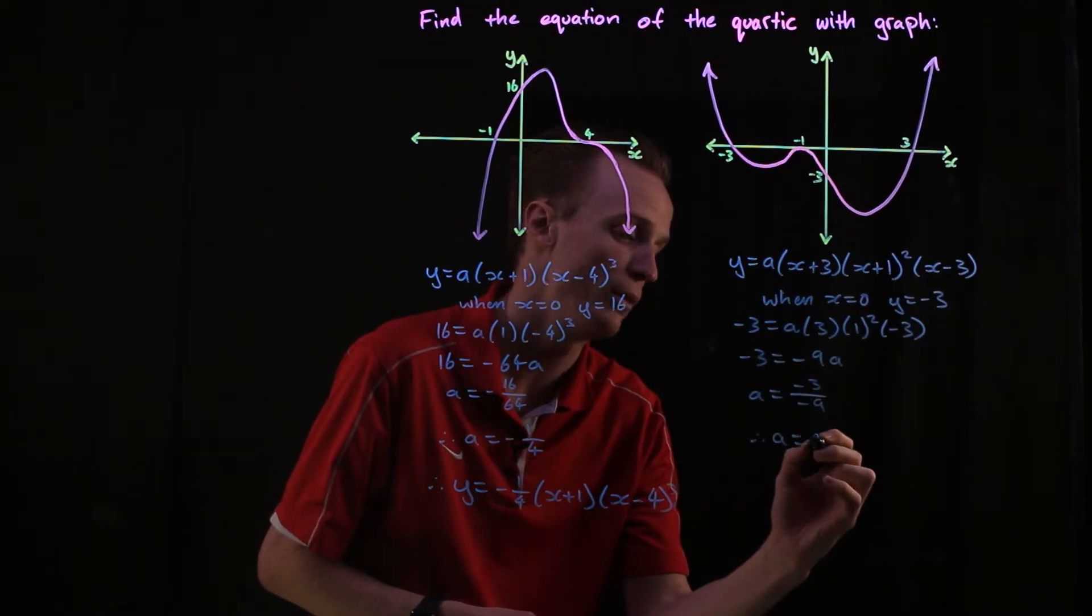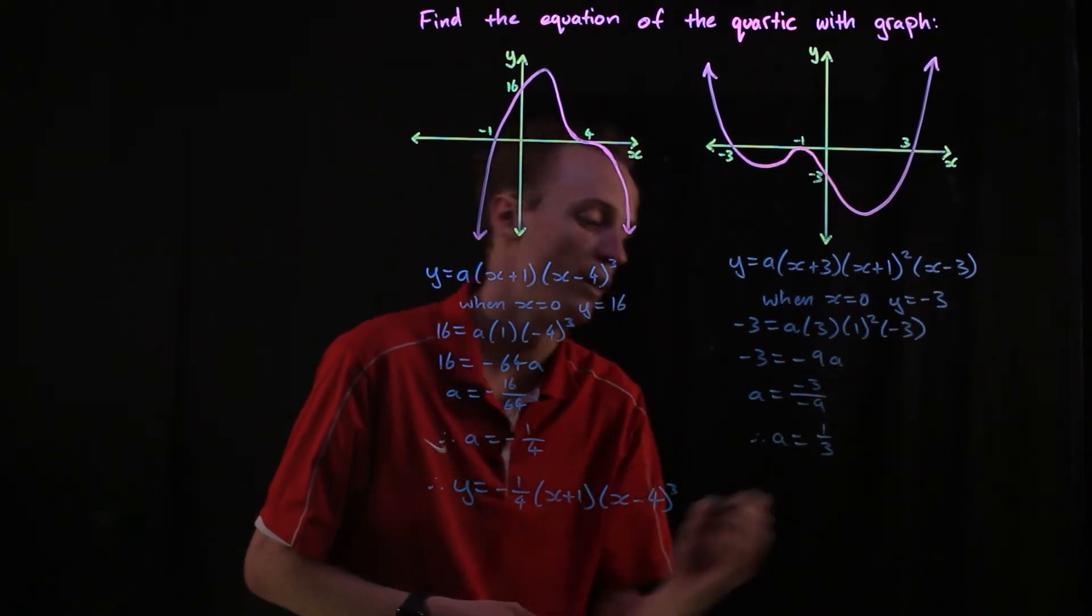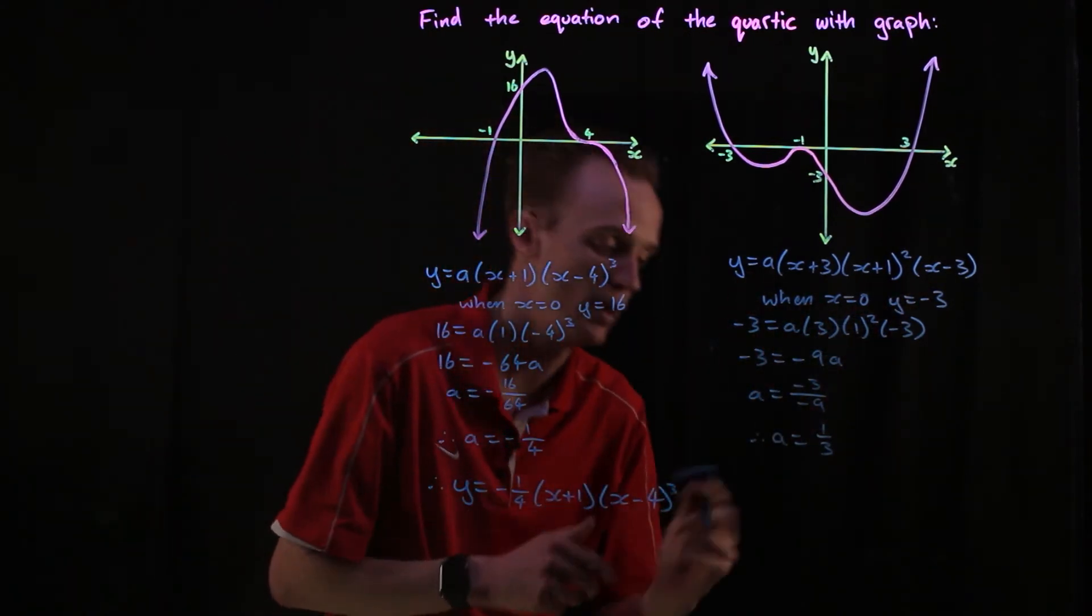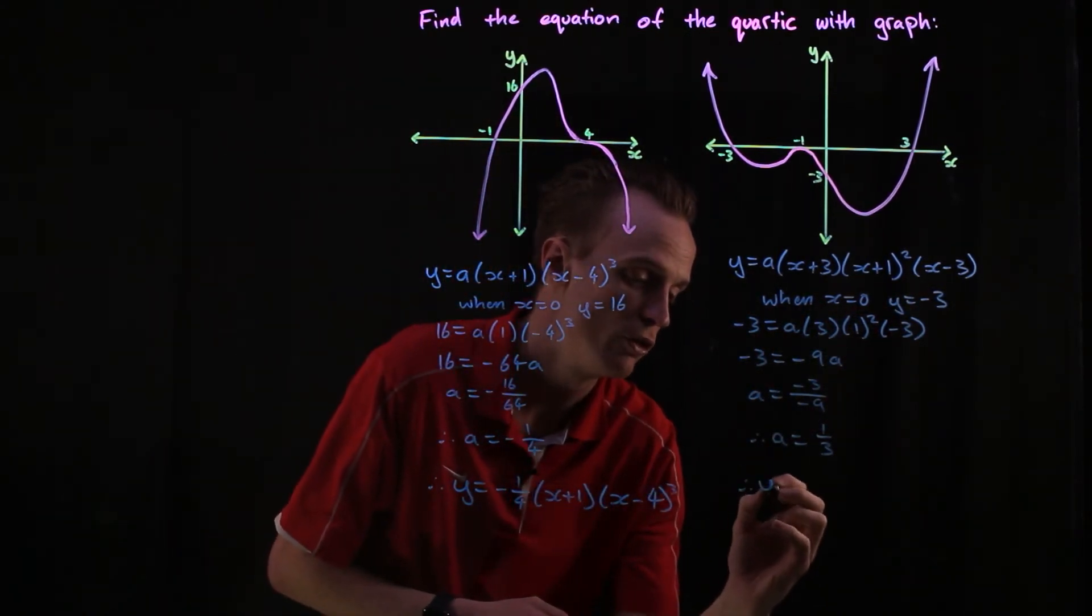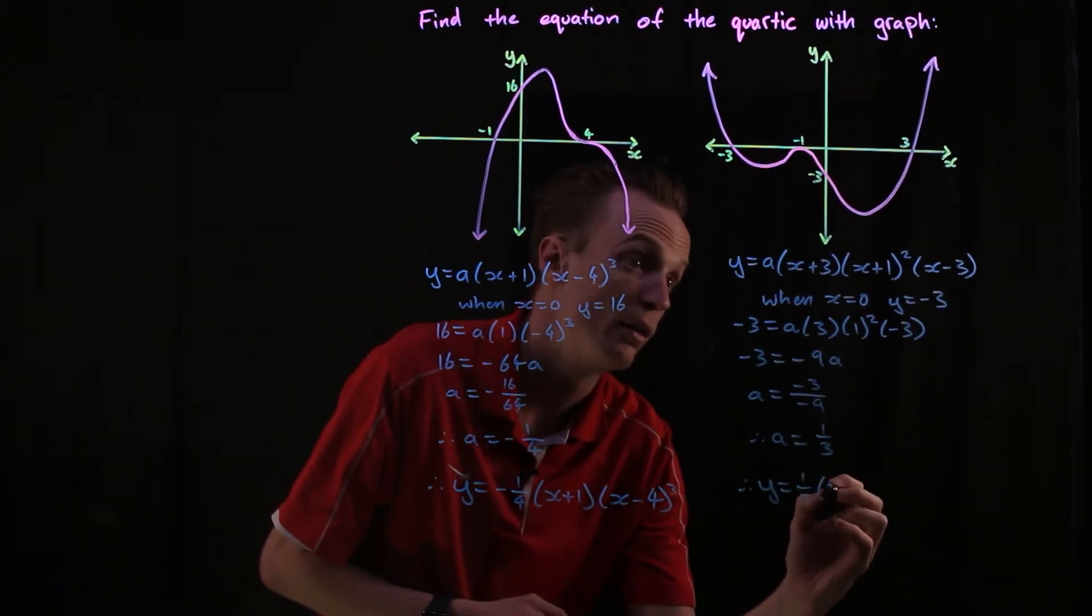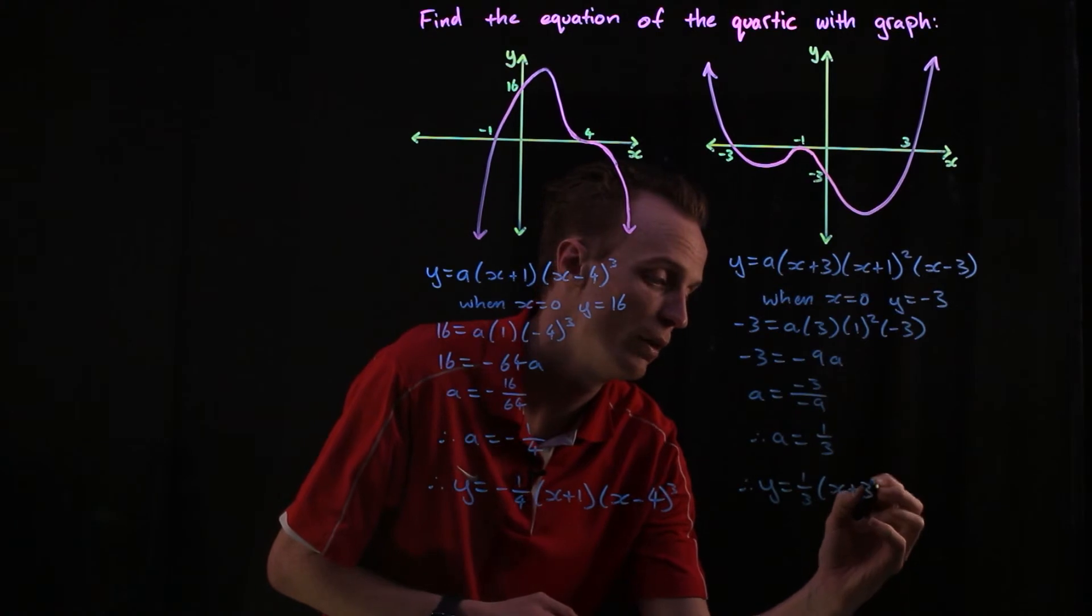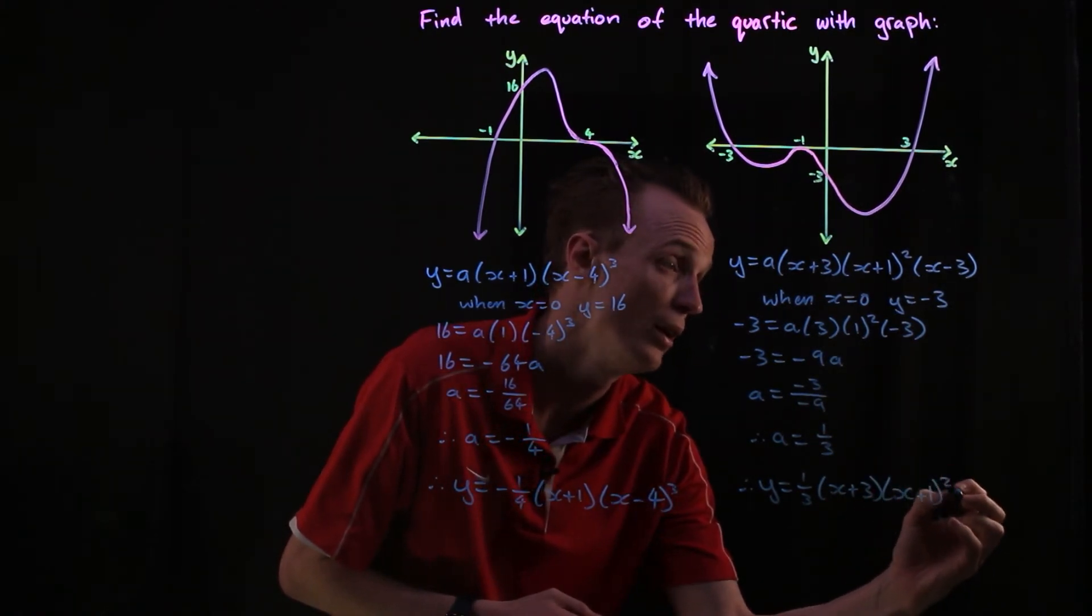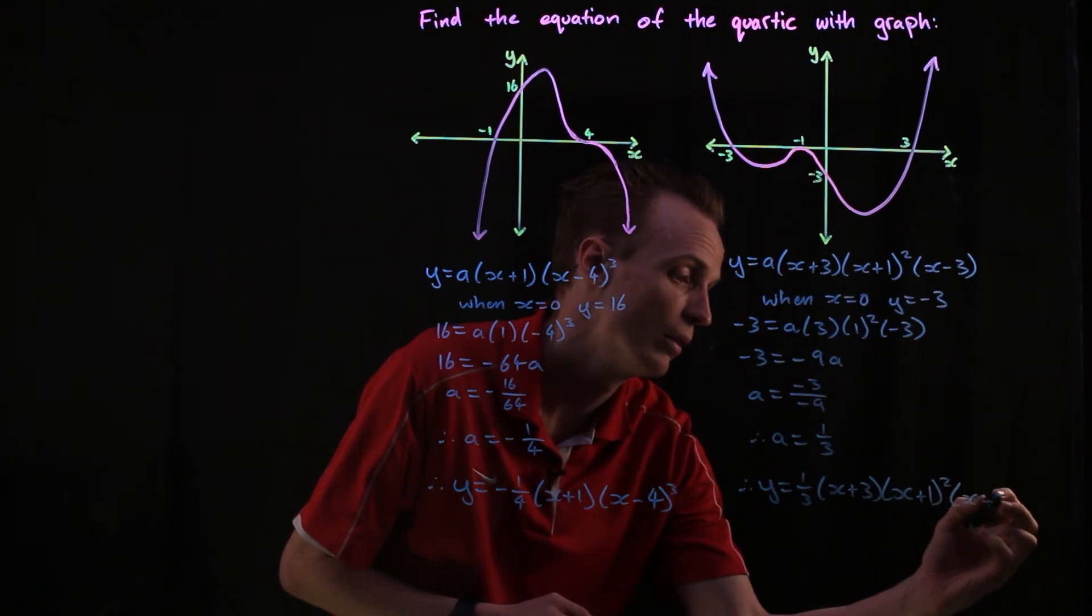So a will be negative three over negative nine, which will just simplify to a positive one third. Now I found my a, I just substitute that back in. So my function here is y equals one third times (x plus three) times (x plus one) squared times (x take three).